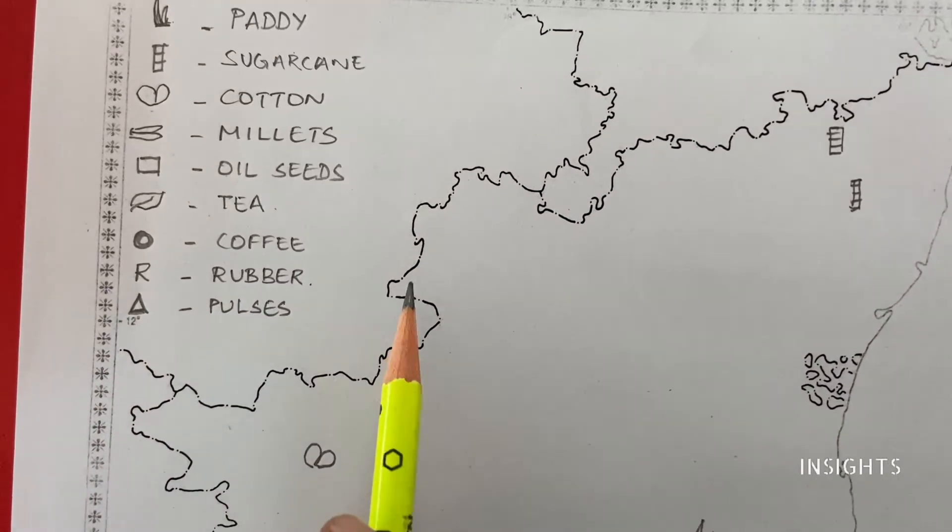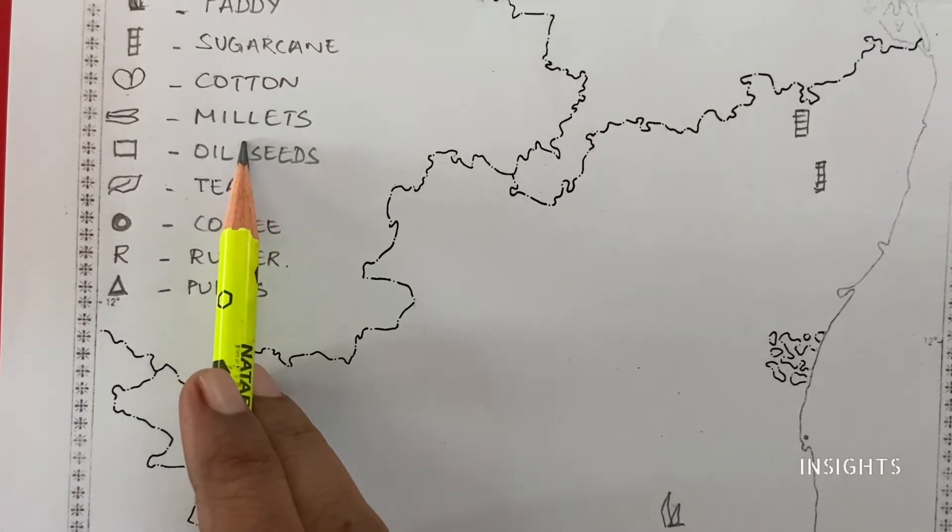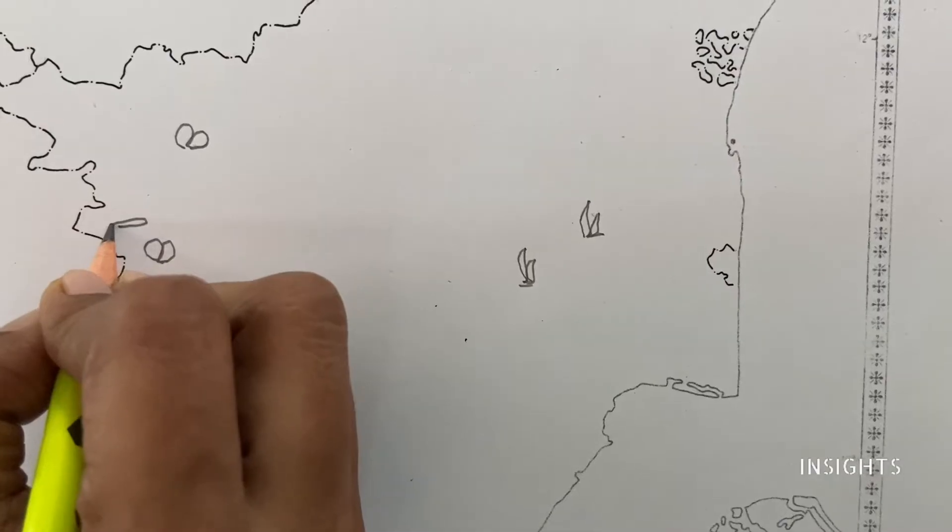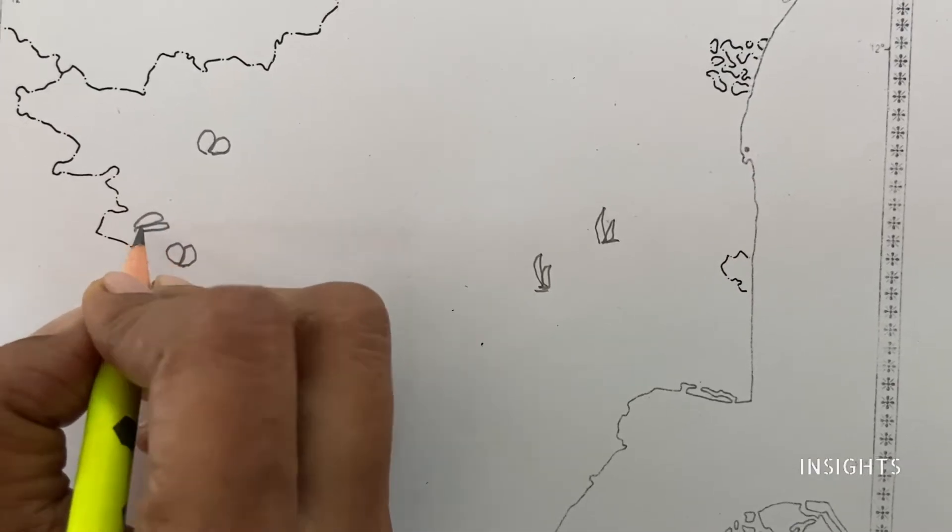Next, millets. Millets are dry crops. Again, for millets, Coimbatore is important. So let's come to this area. Another one, down south. Let's go.